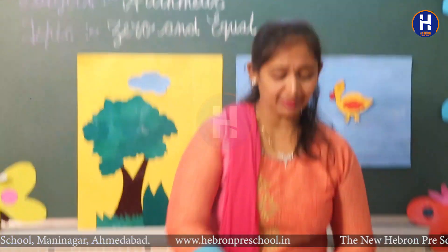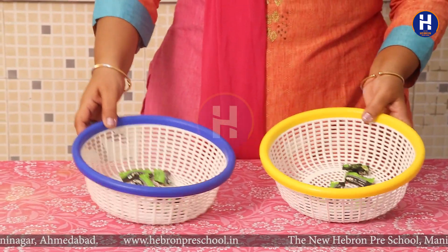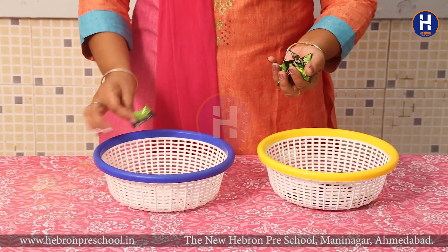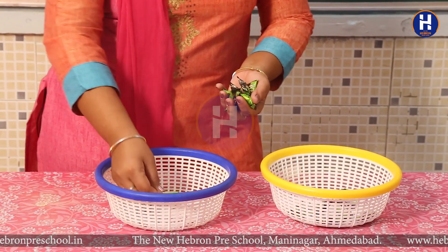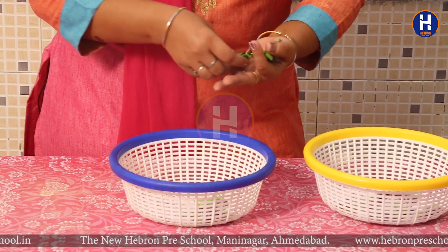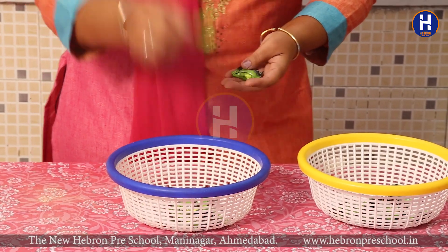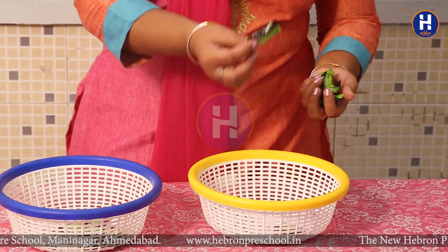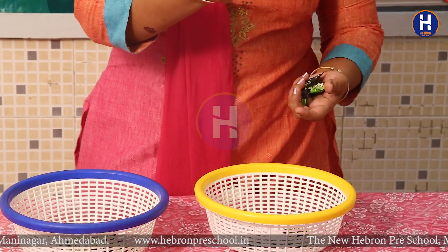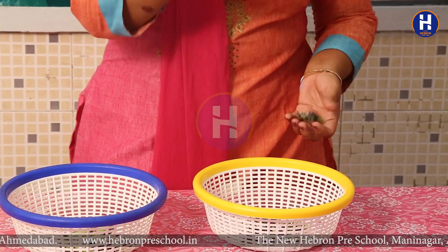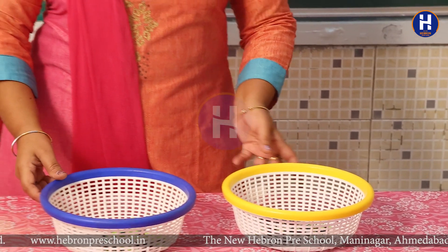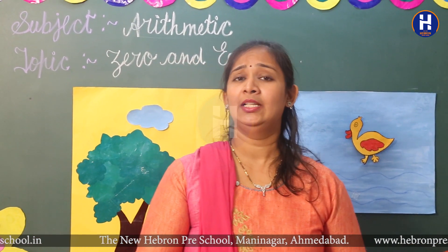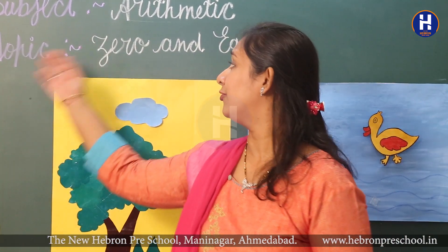Now I am having another example for you. See, I am having two bowls filled with chocolates. Let me count how many chocolates are in each bowl. One, two, three, four, five, six, and seven. Let me count in this bowl also — one, two, three, four, five, six, and seven. Both the bowls are having equal number of chocolates. Isme bhi seven hai, isme bhi seven hai — so it is equal.